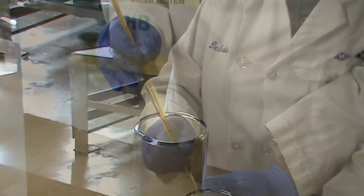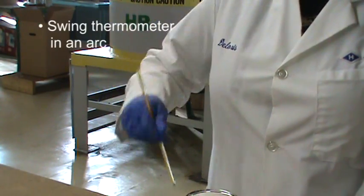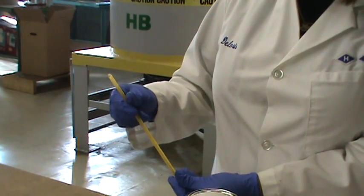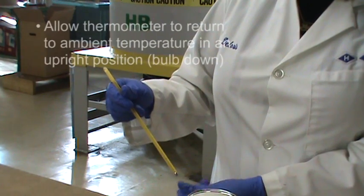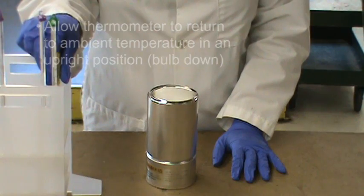Once all the liquid has retreated into the bulb, swing the thermometer bulb down in an arc, forcing the entrapped gas above the column. Allow the thermometer to return to ambient temperature in an upright position. Repeat until the separation has been reunited.